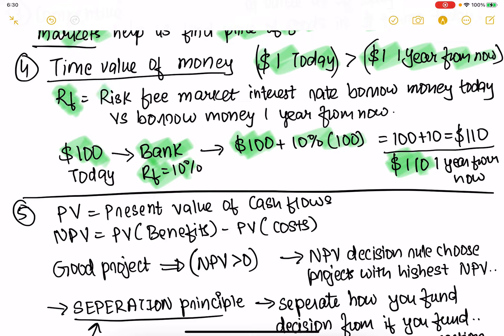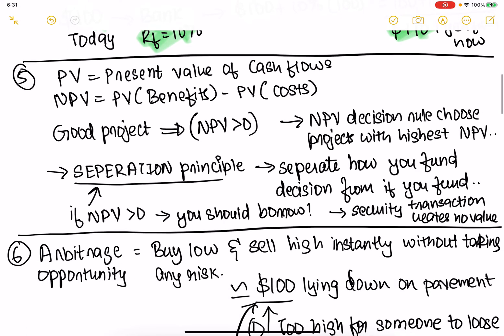RF is the risk-free market interest rate — basically, if you were to put this money in the bank, how much would you get? Banks are risk-free, so that gives you a clear concept of time value of money: a dollar today is greater than a dollar a year from now. Present value is the present value of cash flows, and net present value is present value of benefits minus present value of costs. If benefits outweigh costs, we have a good investment.